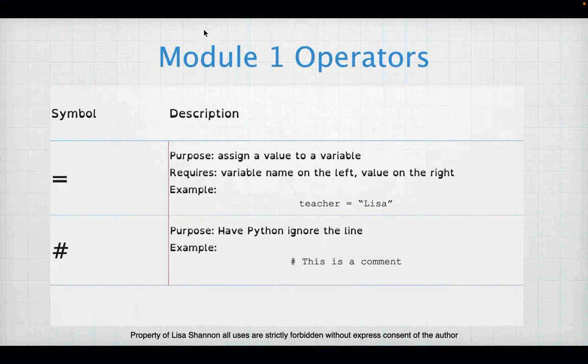The single equal sign means assignment — I'm taking a value and associating it with a variable, which is basically an address in memory. Then there's a pound sign, which means to Python: don't run this line of code. It's a comment. Instead of active code, you're just writing a note. For your projects, dropping in a comment is good — something like 'now I am using a while loop as my gameplay loop.' If you're in my class, I always look at your work, so comments help explain what you're doing.